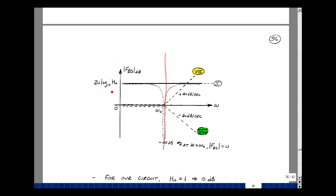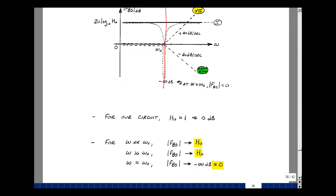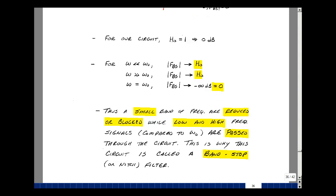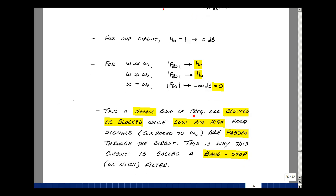Now in our circuit, we found that H naught is equal to 1. So looking at our Bode plot, for omega much less than omega naught, we approach H naught, which is equal to 1 or 0 dB in our case. And when it's much greater than omega naught, the same thing. When omega equals omega naught, we have a gain of 0, which is minus infinity. So a small band of frequencies are blocked or removed, and the low and high frequency signals, compared to omega naught, are passed. That's why we call this a band stop or notch filter.